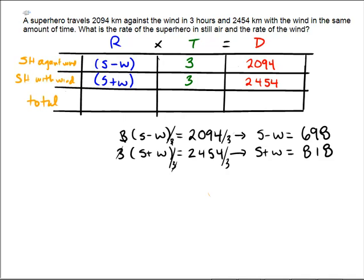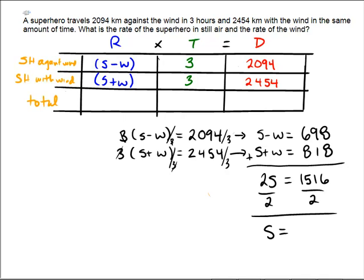Now the two equations are set up nicely with a minus w and a plus w. So, I'll add those two equations together. s plus s is 2s. The w's cancel out because one is positive, one is negative. 698 plus 818 is 1,516. So, now simply dividing by 2 is going to yield the superhero's rate of speed. The superhero is 1516 divided by 2, which means that they're traveling at 758 kilometers per hour.